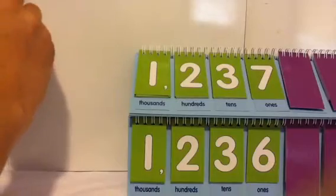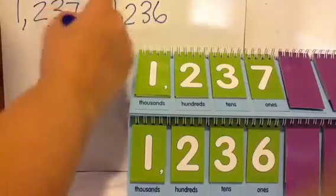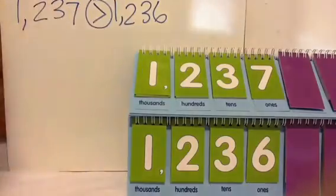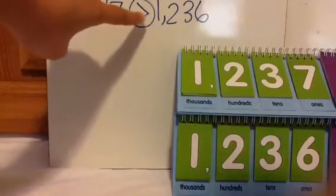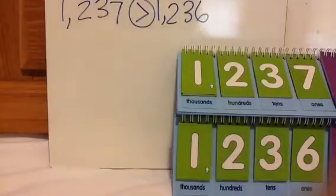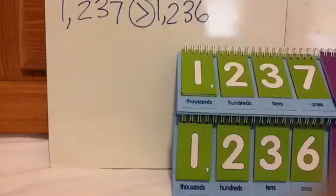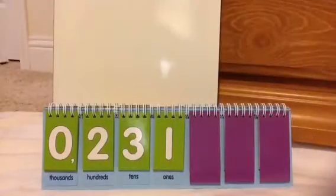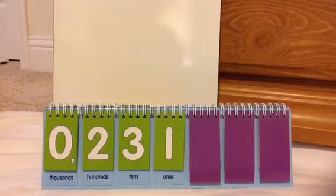To represent that using a symbol, I would use the greater than symbol. The more open side points to the one that has more. So one thousand two hundred thirty-seven is greater than one thousand two hundred thirty-six.